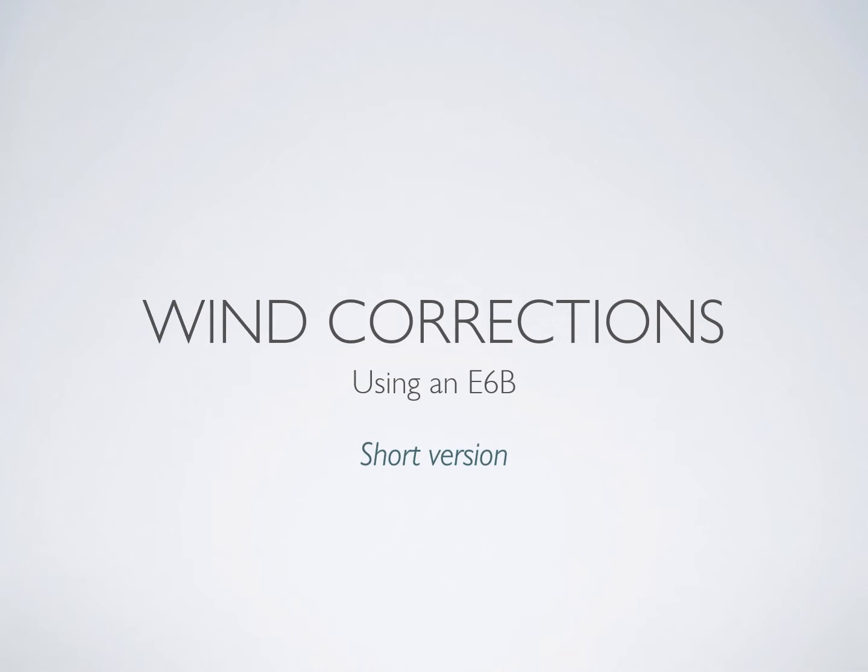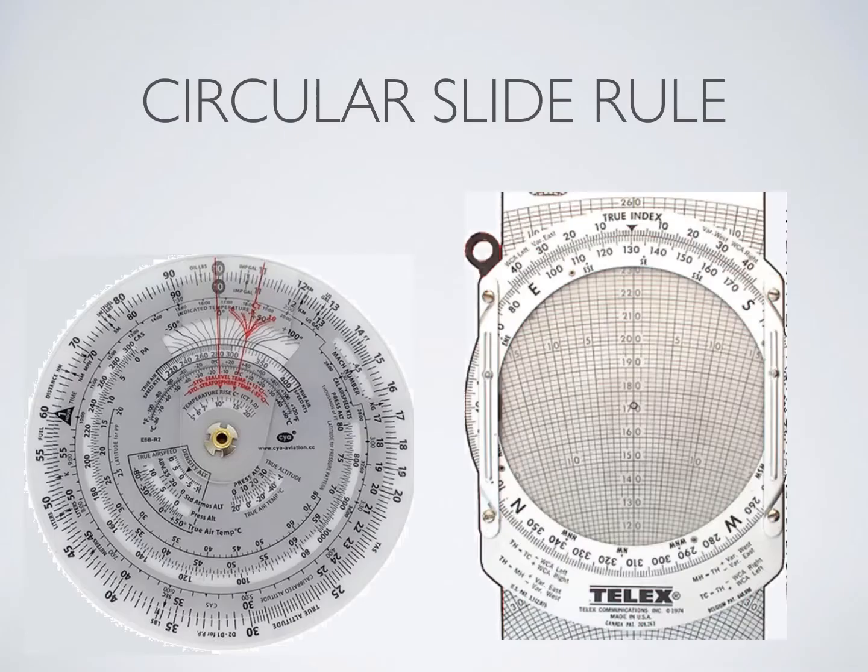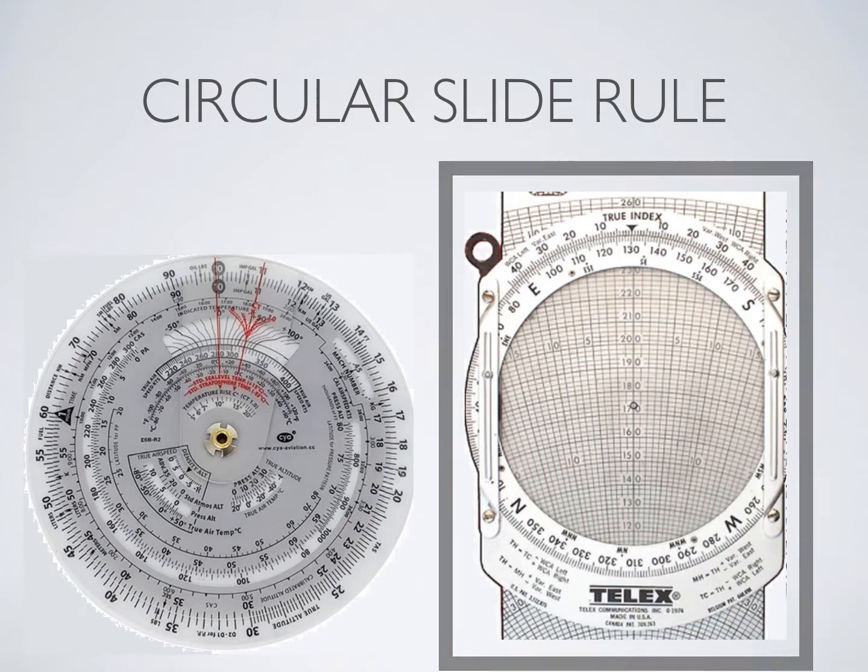Welcome to a short video on how to do wind corrections using an E6B. This video is going to use the version that you see here on the right.